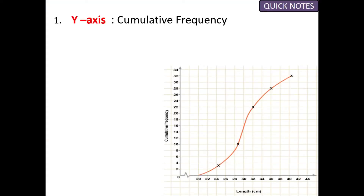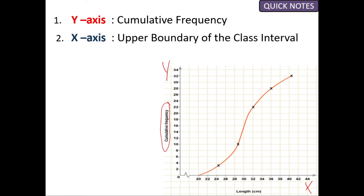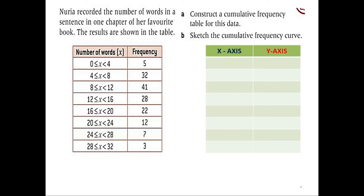Quick notes while you draw a cumulative frequency curve. Here I have given an example of how a cumulative frequency curve looks like. On the y-axis it's the cumulative frequency, and on the x-axis it is the upper boundary of the class interval. When you plot, you must have an idea about the shape of your curve — it should be an S-shape. Don't look for an exact S, but it should be an S-shaped curve.